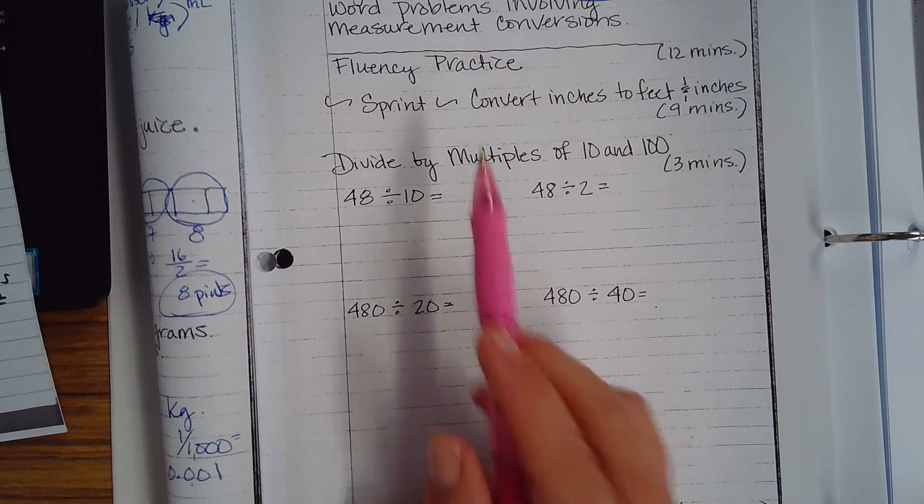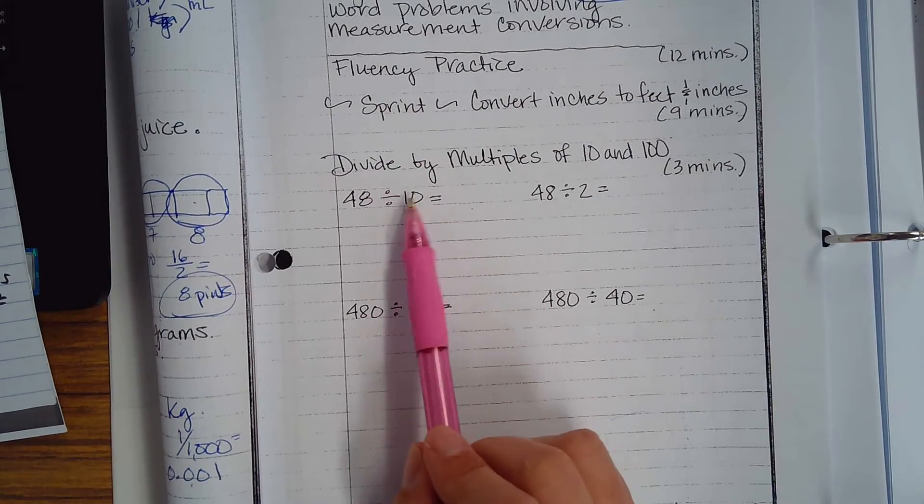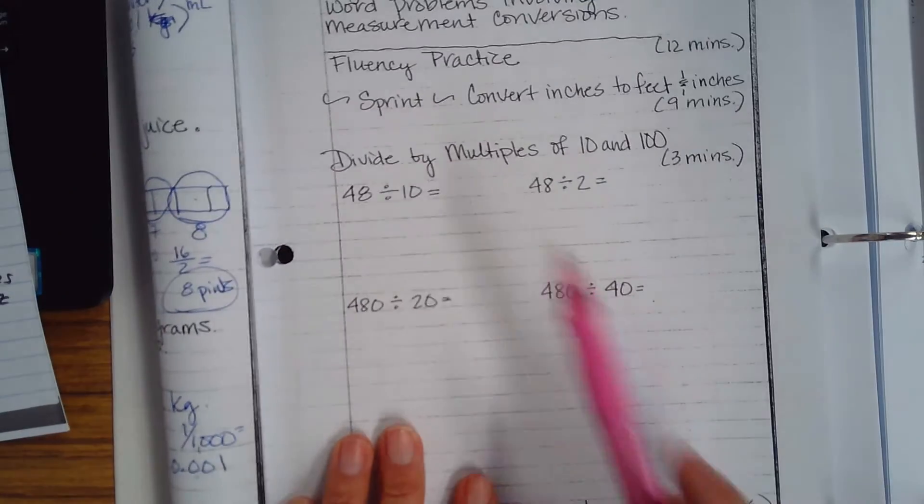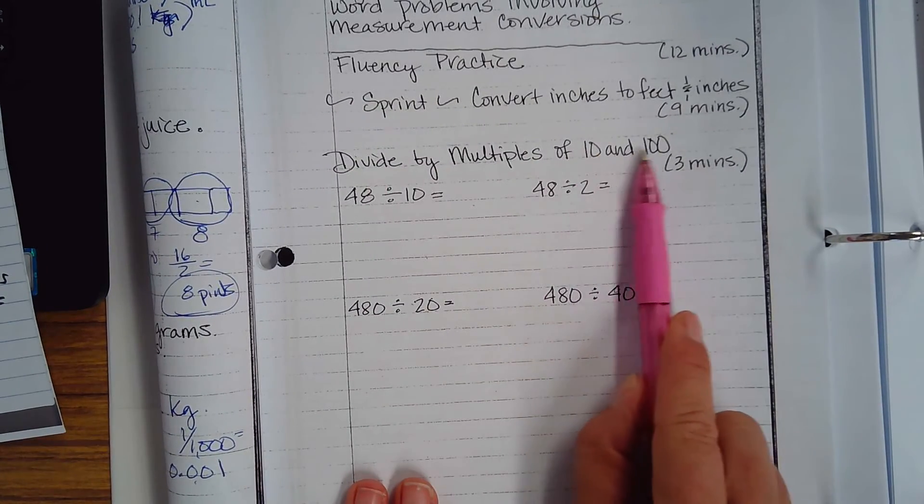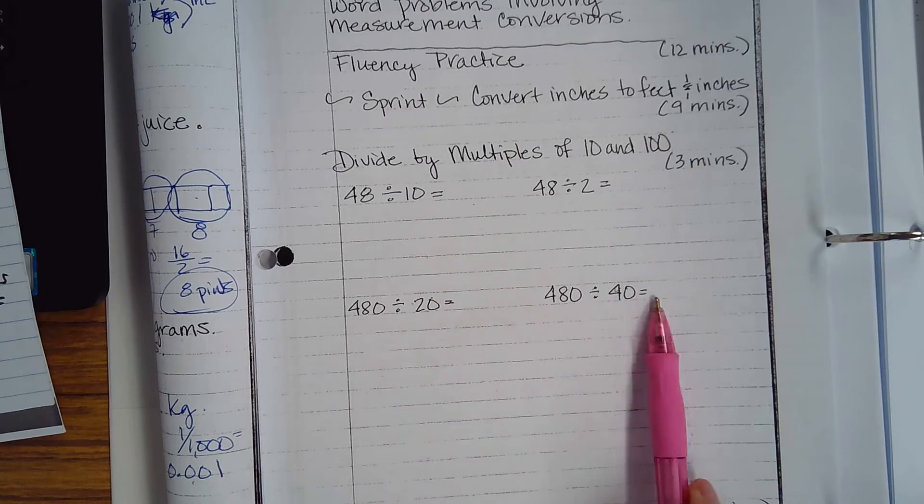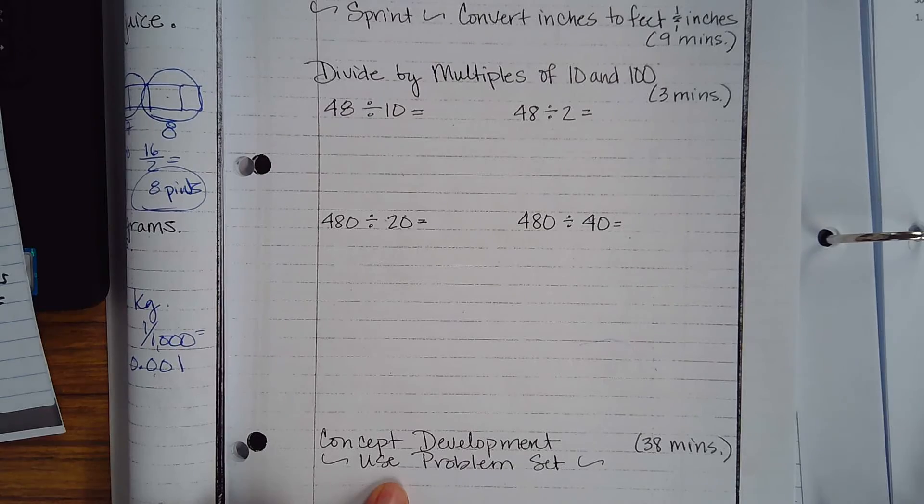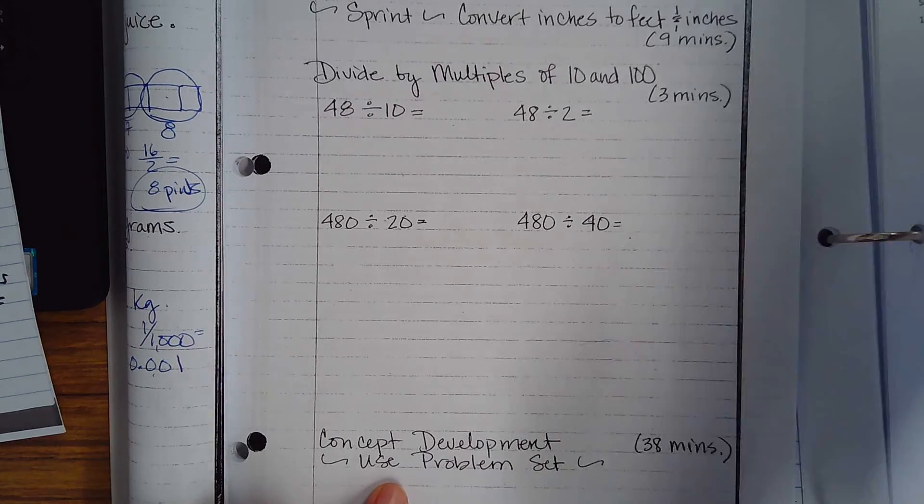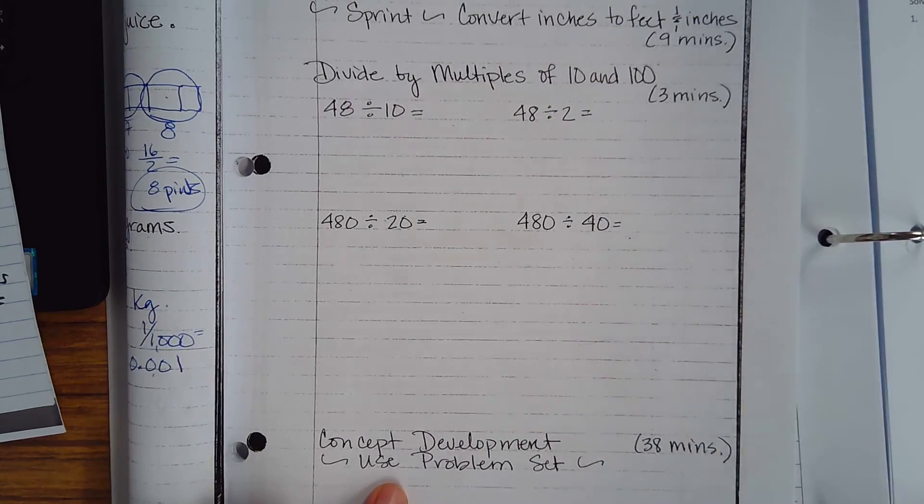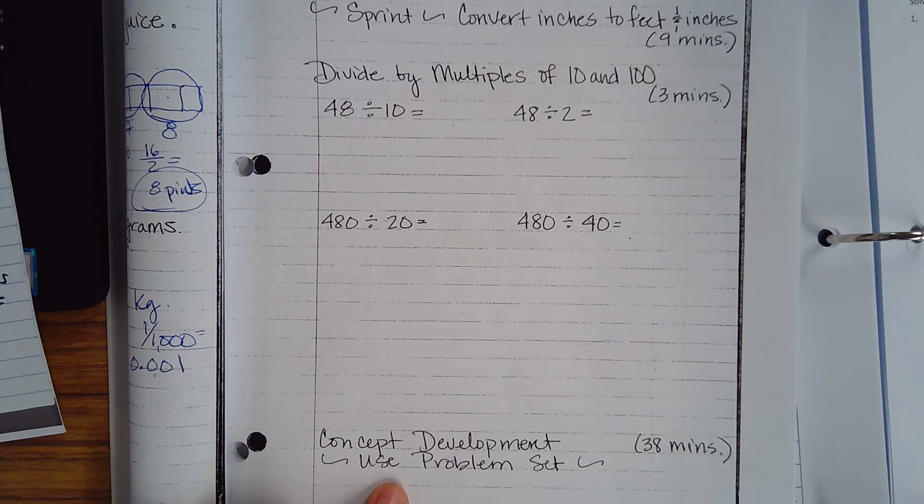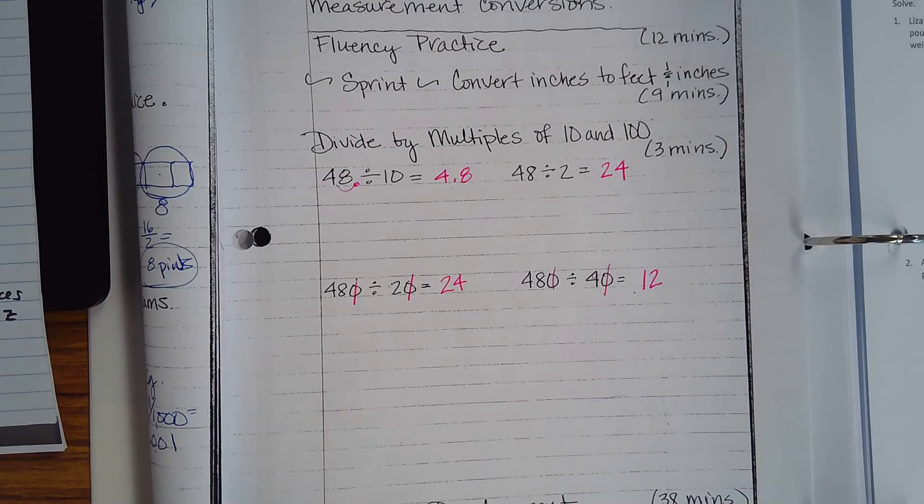All right, here we go. Now we're back to our in-class notes book. Divide by multiples of 10 and 100, so you have four problems. Then we're going straight into our concept development inside the problem set. So we're going to work through the problem set as our concept development today, okay? All right, get going and we will come right, I mean seriously, like two minutes. Let's go.